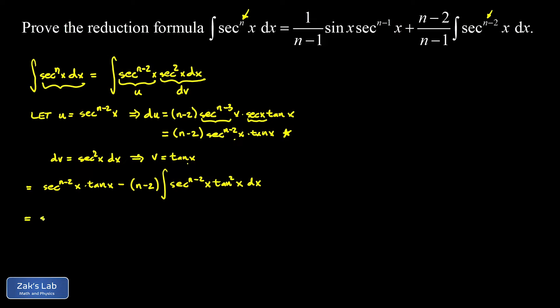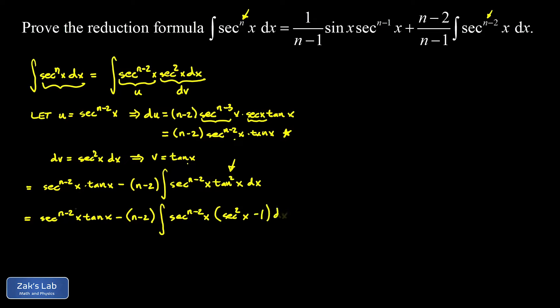The spectator term stays out in front. We notice that tangent squared has a Pythagorean identity: we can rewrite it as secant squared minus one. This is promising because when we distribute, the first term will produce a copy of the original integral secant to the nth of x. So we replace tangent squared with secant squared minus one.